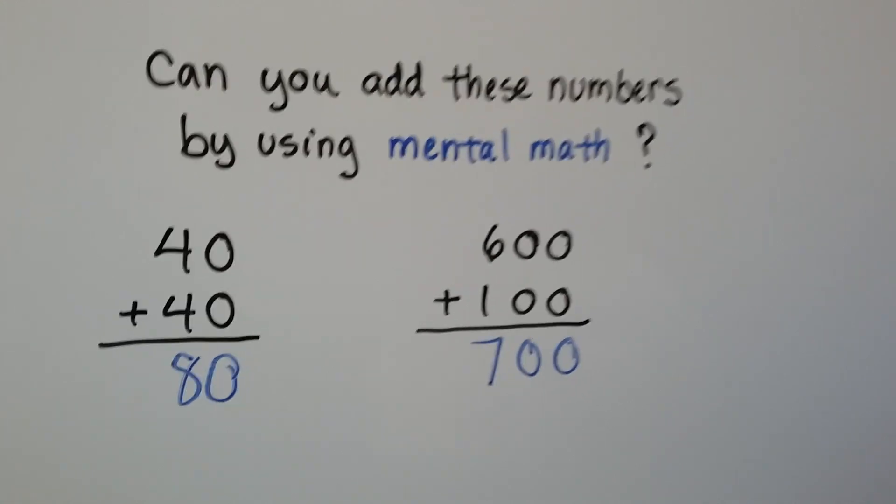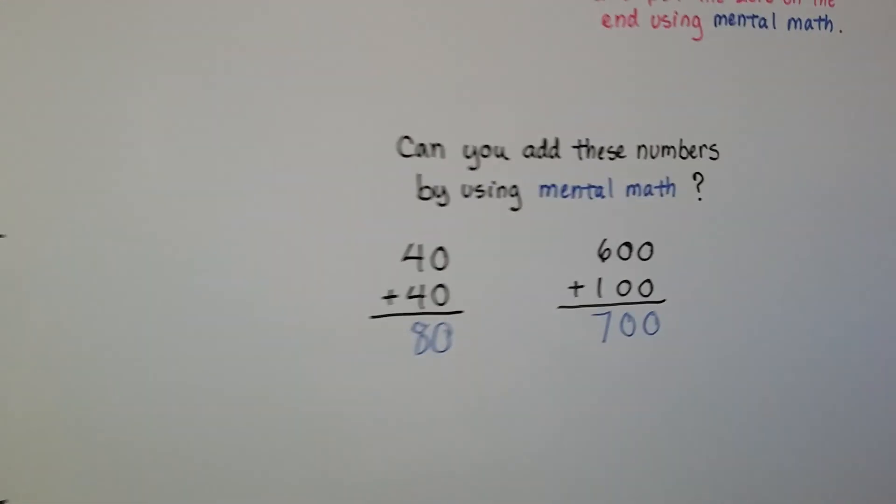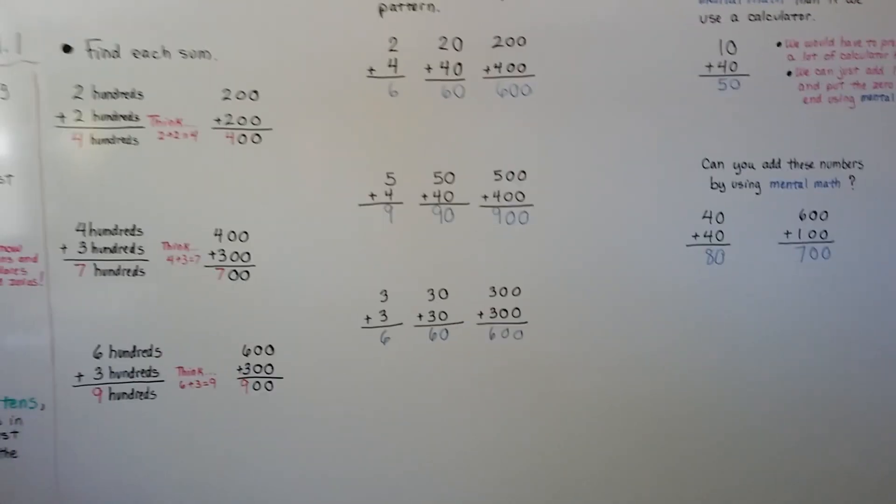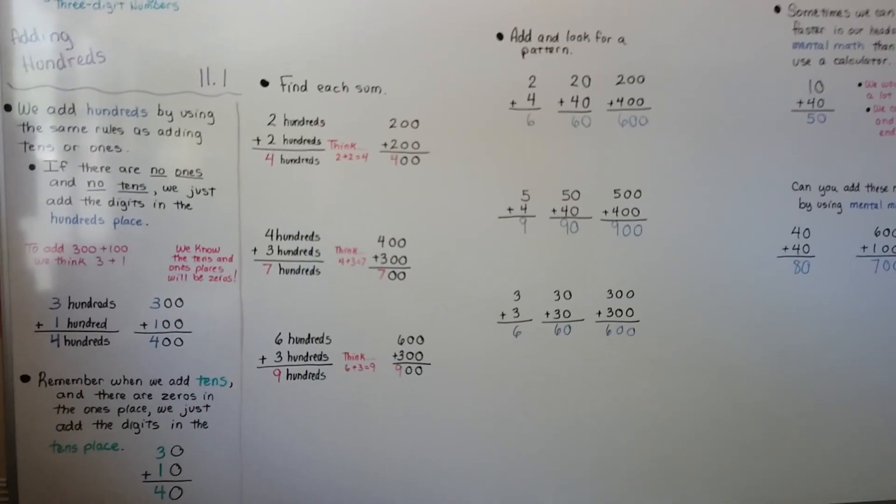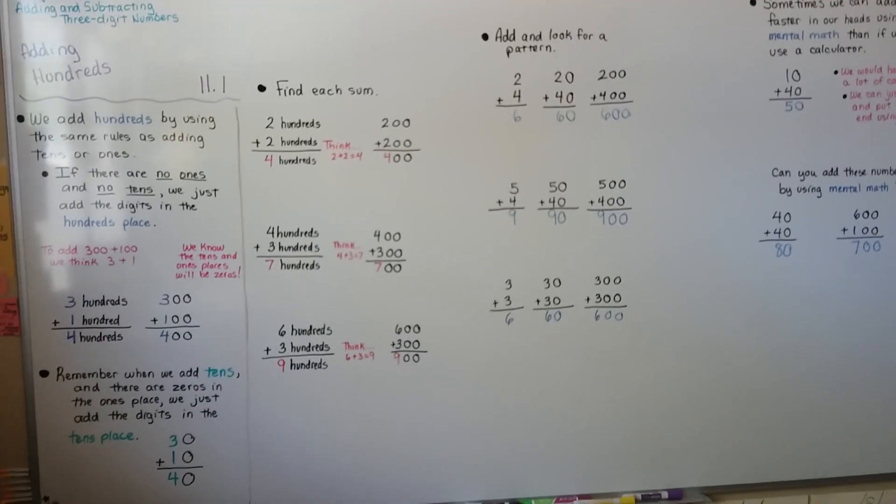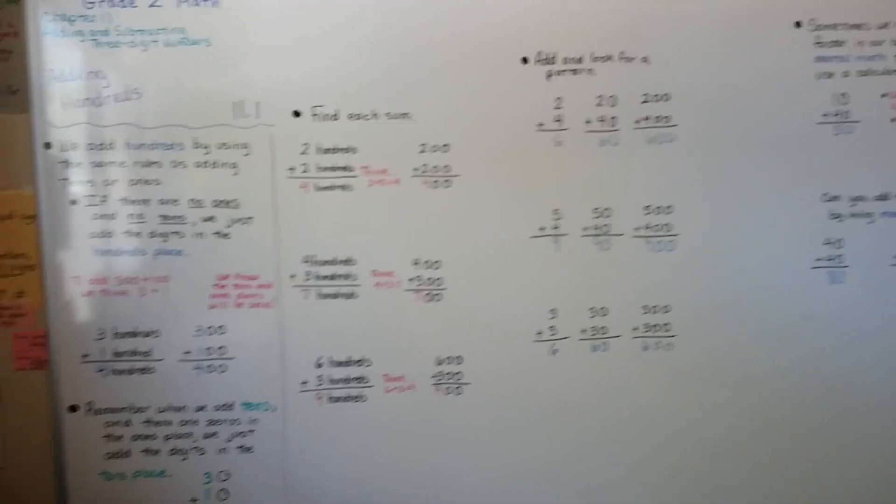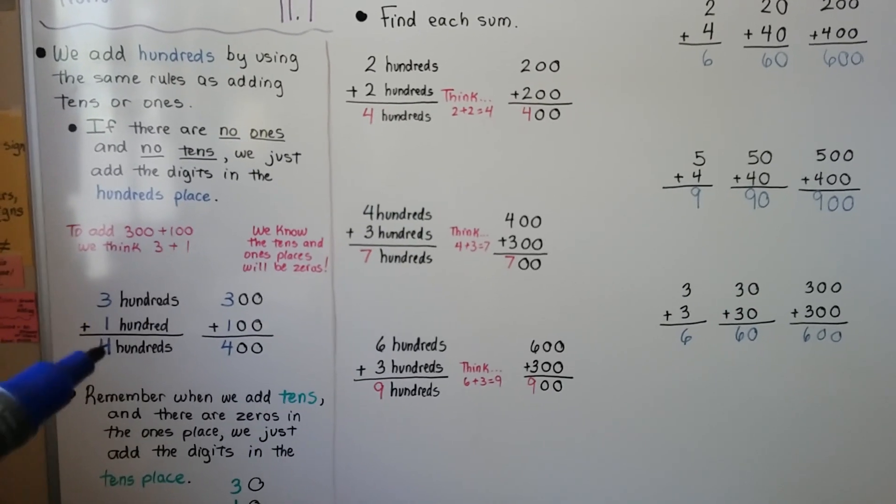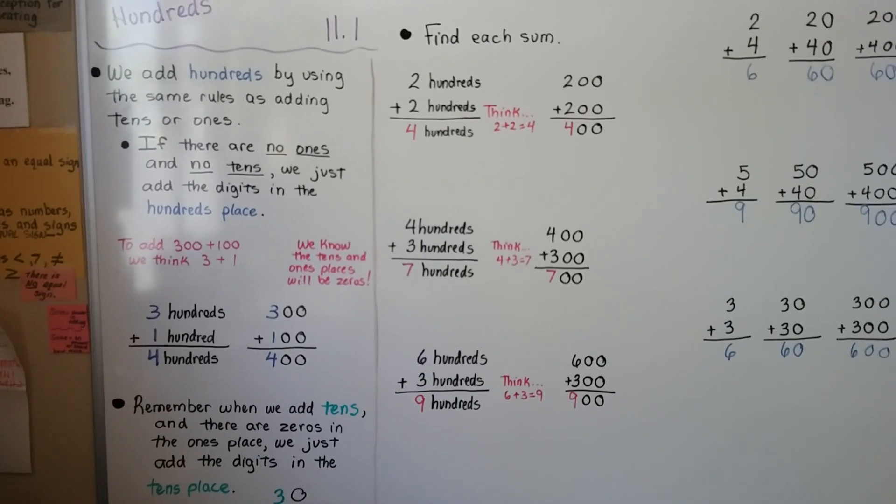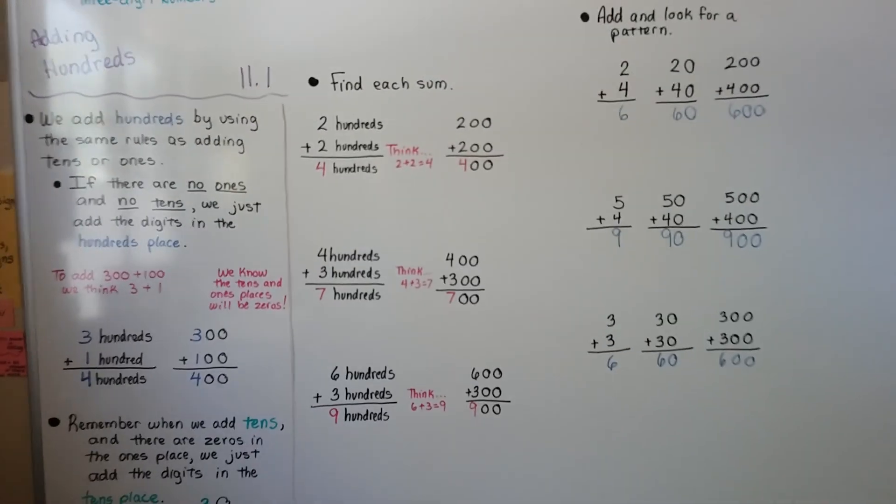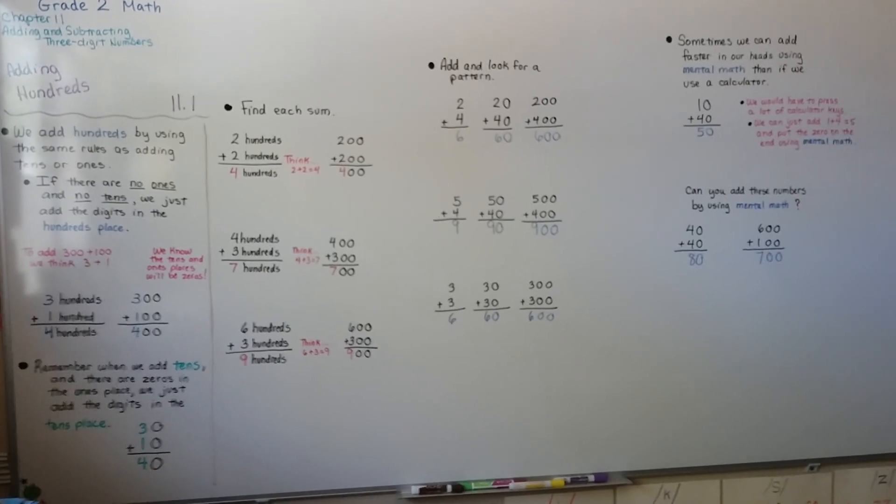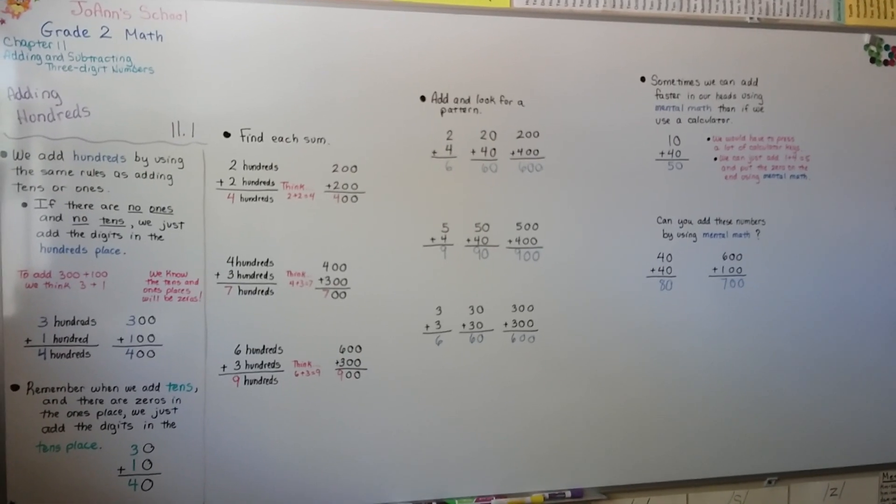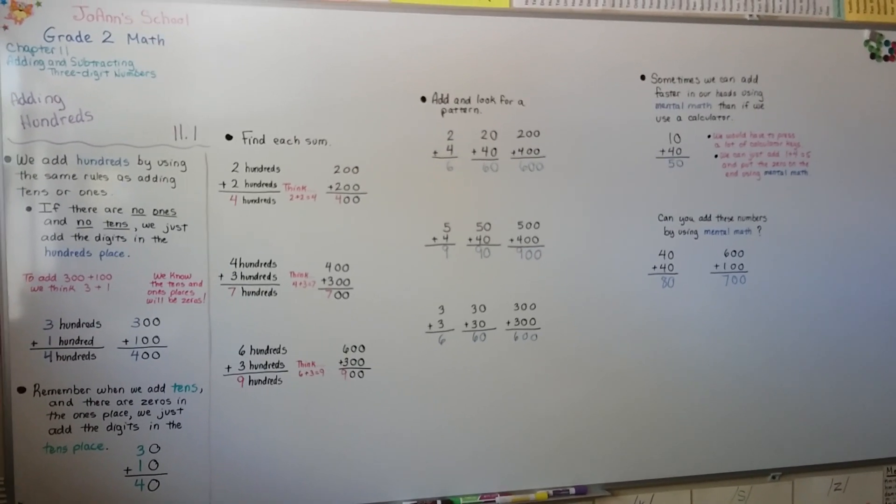So, sometimes mental math can be quicker than using a calculator, especially if there's zeros after the digit we're adding. So, that's adding hundreds, those are whole hundreds with no tens and no ones. Just remember, you can think like you're just adding two digits and just put the zeros on. We're going to be exploring more three-digit addition in the next video, and I hope I'll see you there. Don't forget to hit the like button if you like my videos or if I'm helping you. Bye.